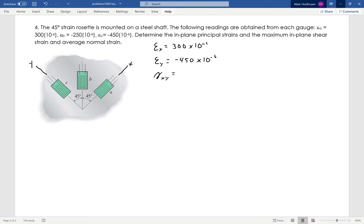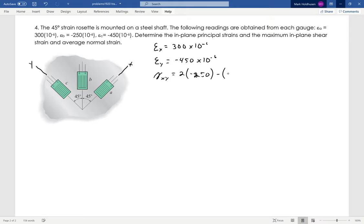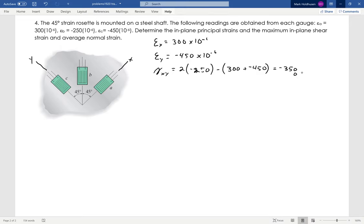From the equation in your book for a 45 degree strain rosette, I can just very simply find 2 times negative 250 minus 300. I'm dropping the 10 to the negative 6 just in the calculation and I'll add it back when I get to the answer.